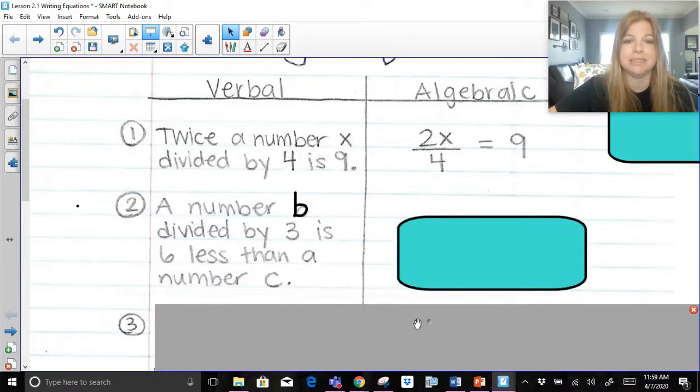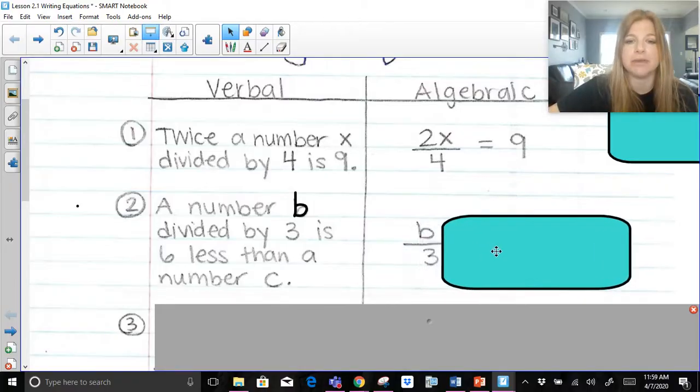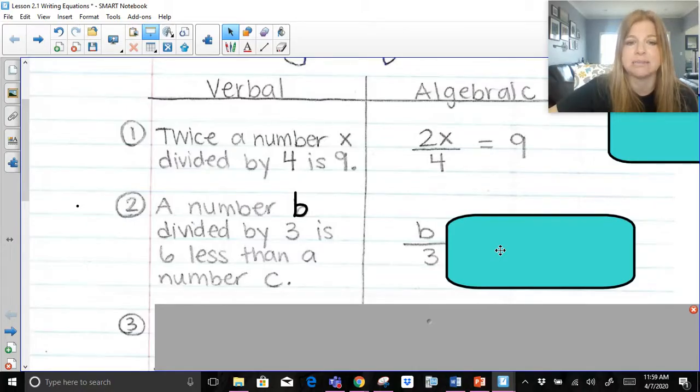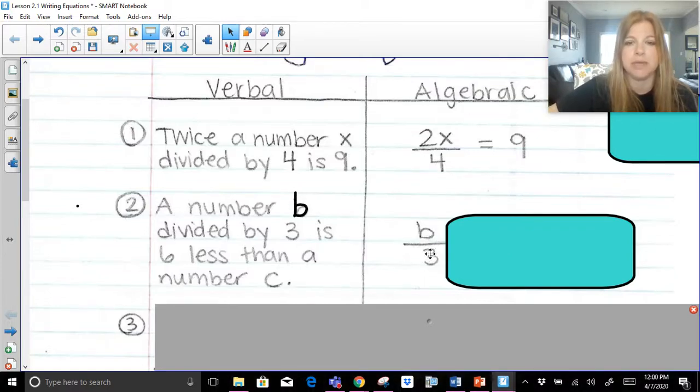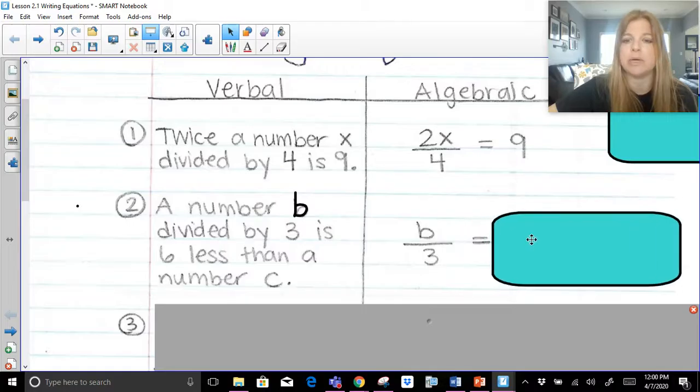A number b divided by 3, so again that divided by, we're going to keep that in fraction form. A number b divided by 3 is 6 less than a number c. So now let's look at this. A number b divided by 3 is, so that word is means our equal sign.